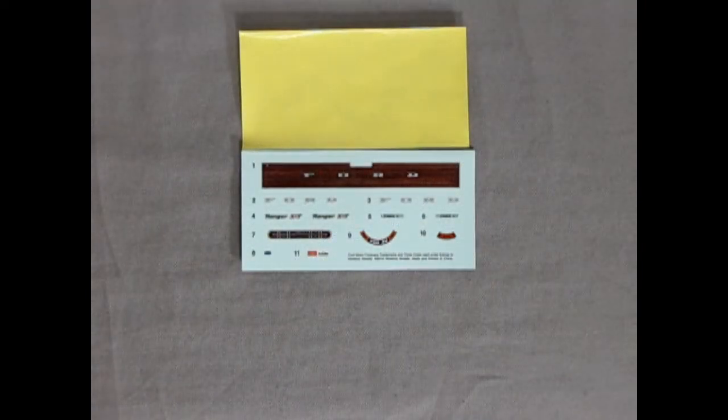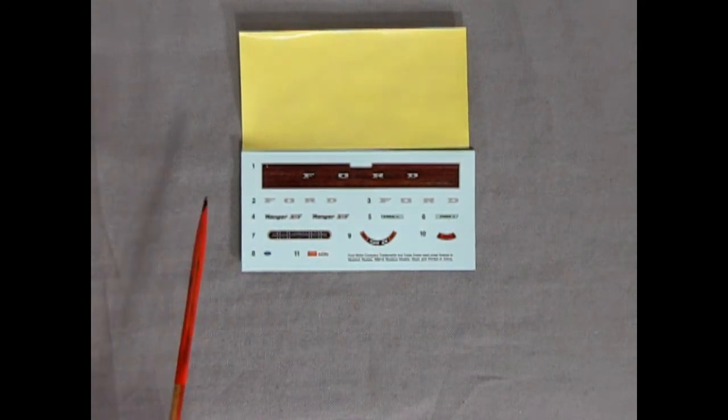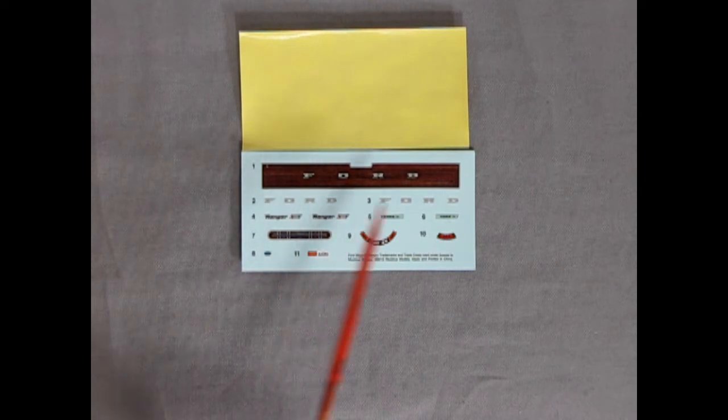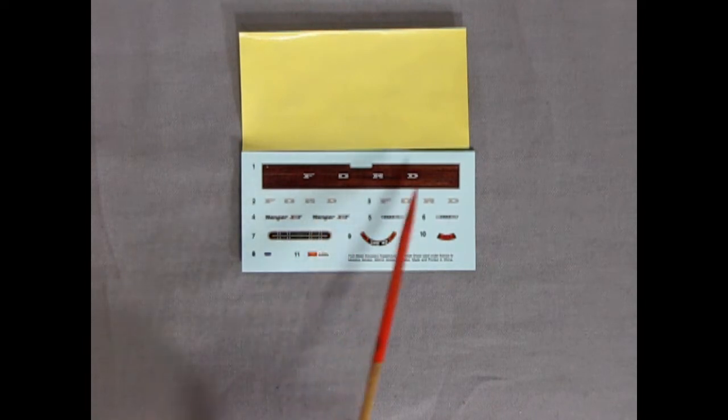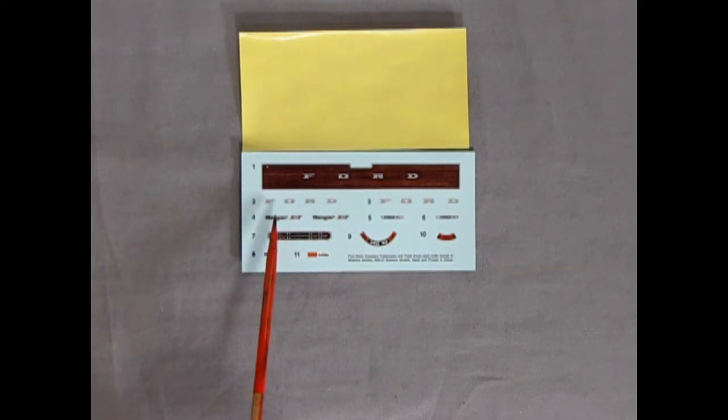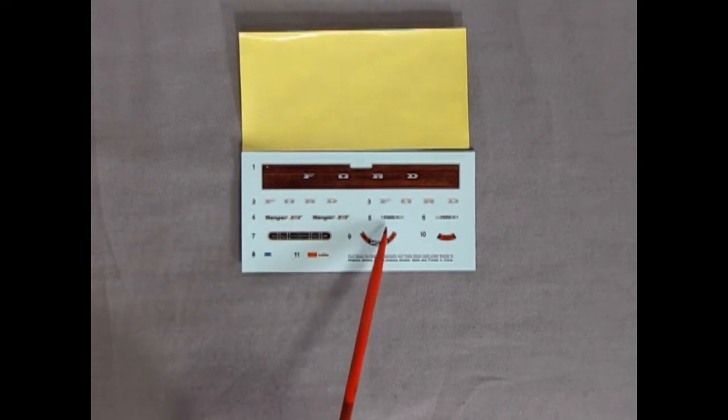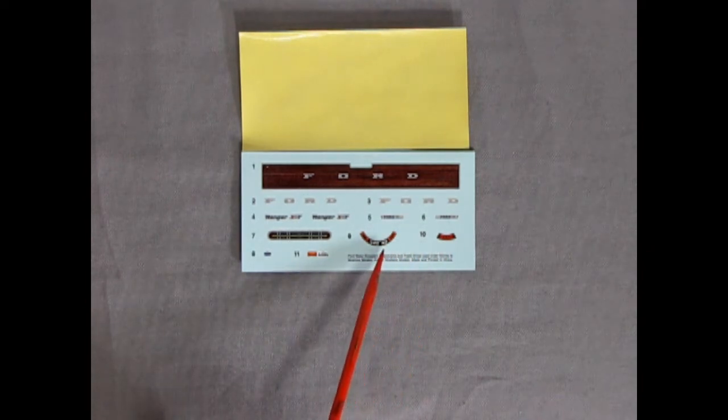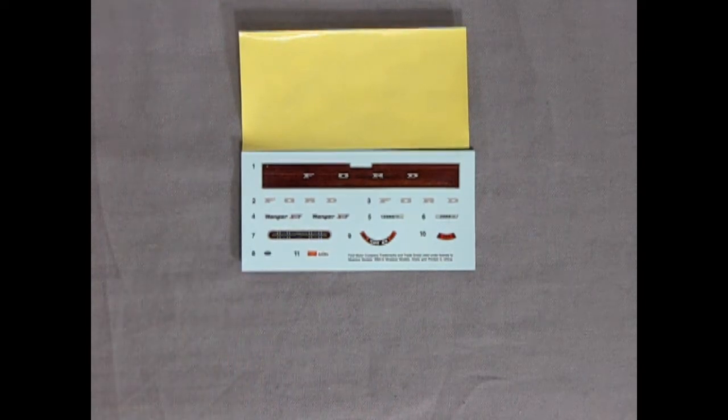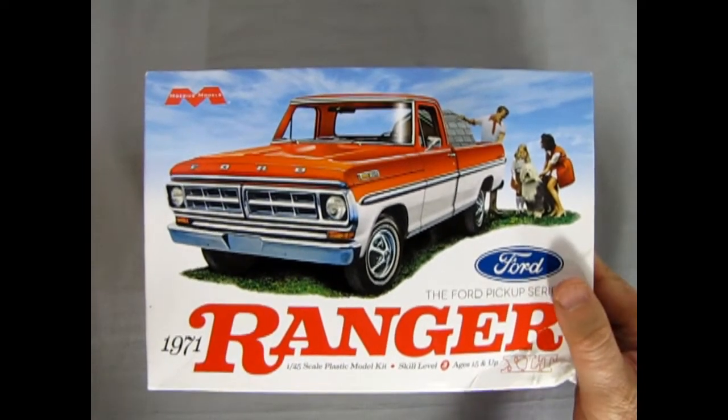Last but not least, we have our decal sheet. It's not quite as big as the one that was in the 69 and 70 Ford truck kits. However, it is pretty cool still. You get the nice wood grain back panel with the Ford letters in it. Or if you don't want that, you have a choice of two different Ford letters. Then we've got our Ranger script here. And our side marker lights. And then we've got our air cleaner decals, as well as the instrument panel. An auto light and a small Ford oval. And that's the skinny on our 1971 Ford Ranger by Mobius Models.